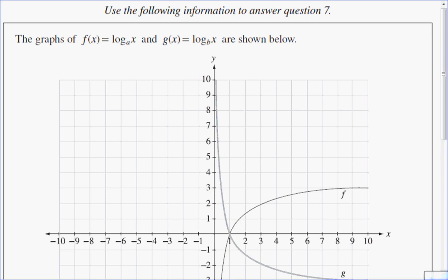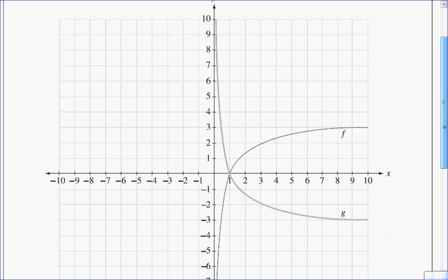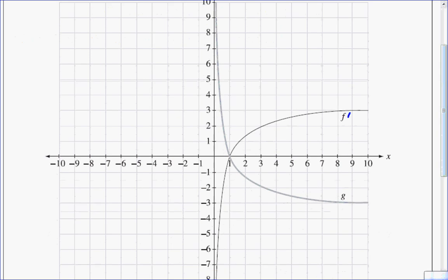In this multiple choice question, we're given two log graphs. One is f(x) = log base a of x, and the other g(x) = log base b of x. f(x) is equal to log base a of x, and g(x) is equal to log base b of x.